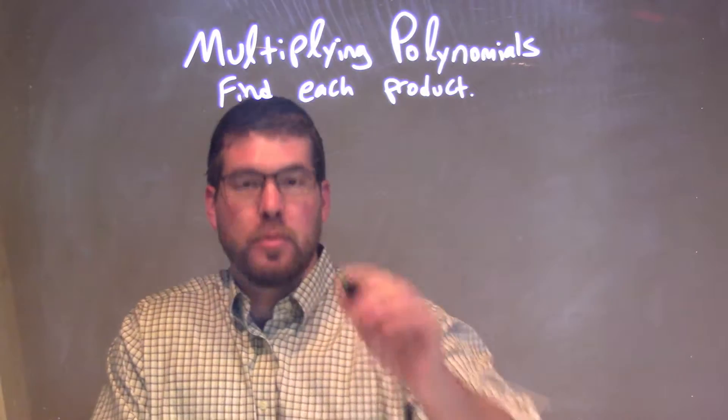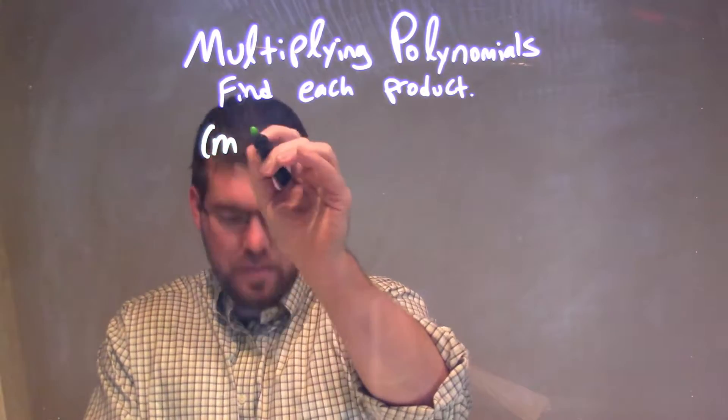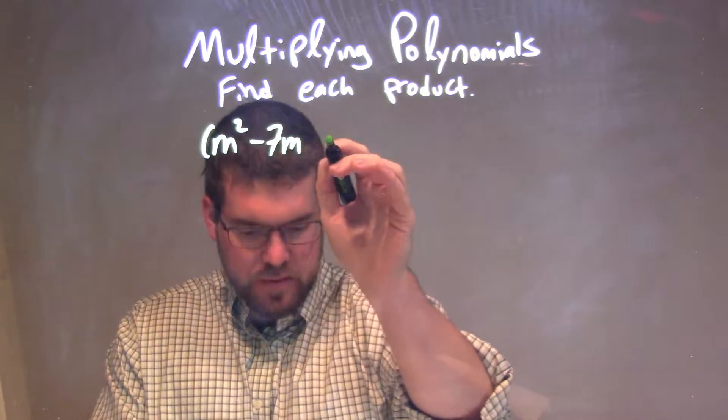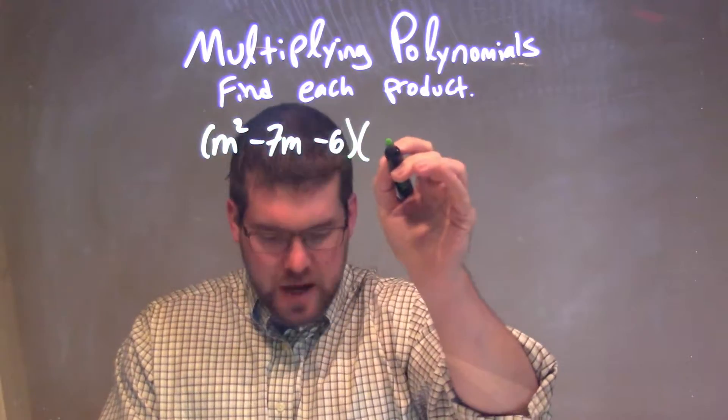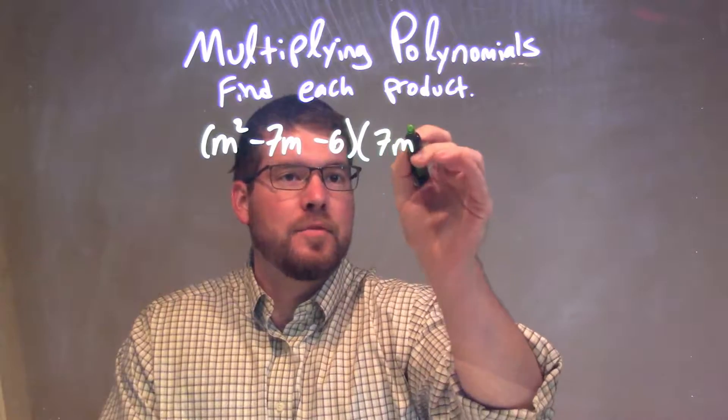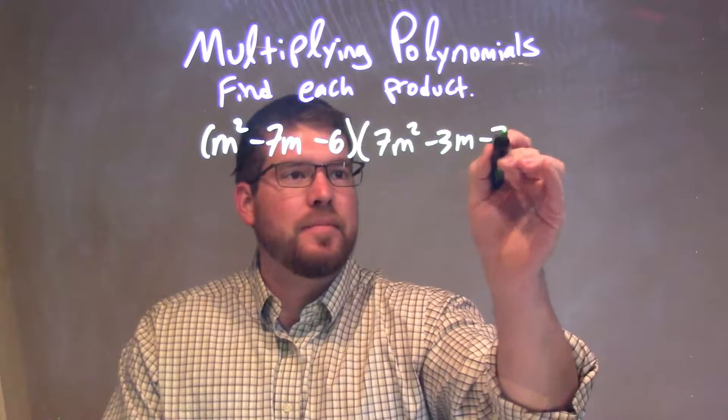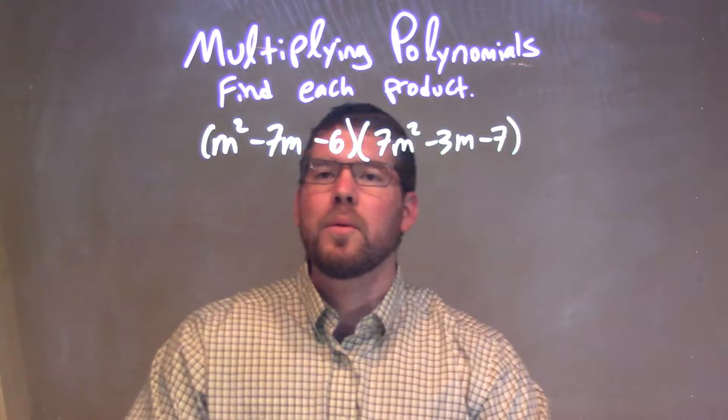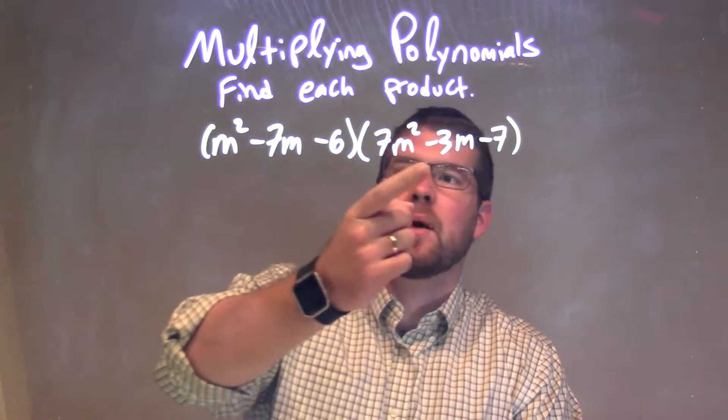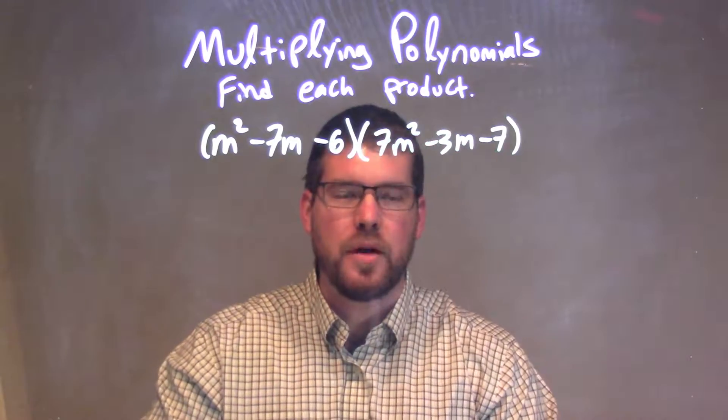So if I was given this problem: m squared minus 7m minus 6 times the second parenthesis 7m squared minus 3m minus 7. What we want to do is all parts of my first parenthesis may be multiplied by all parts of my second parenthesis.